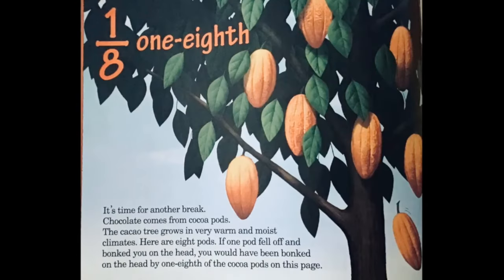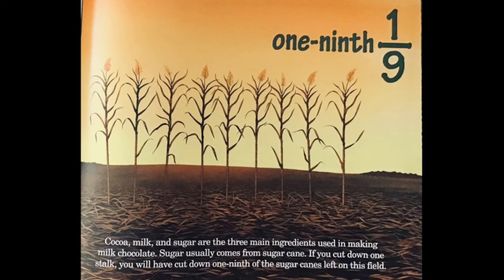Chocolate comes from cocoa pods. The cacao tree grows in very warm and moist climates. Here are eight pods. If one pod fell off and bonked you on the head, you would have been bonked by one eighth of the cocoa pods on this page. Cocoa, milk, and sugar are the three main ingredients used in making milk chocolate. Sugar usually comes from sugar cane. If you cut down one stalk, you will have cut down one ninth of the sugar canes left on this field.